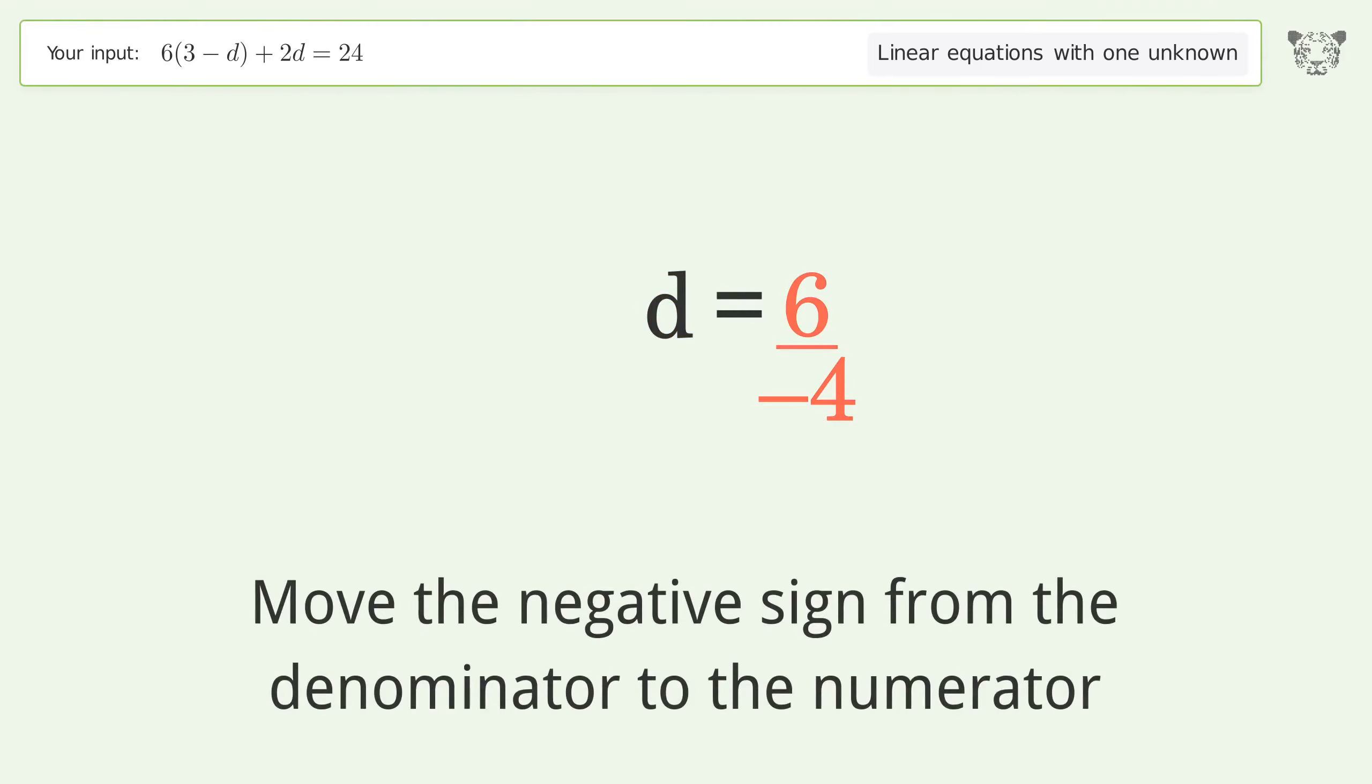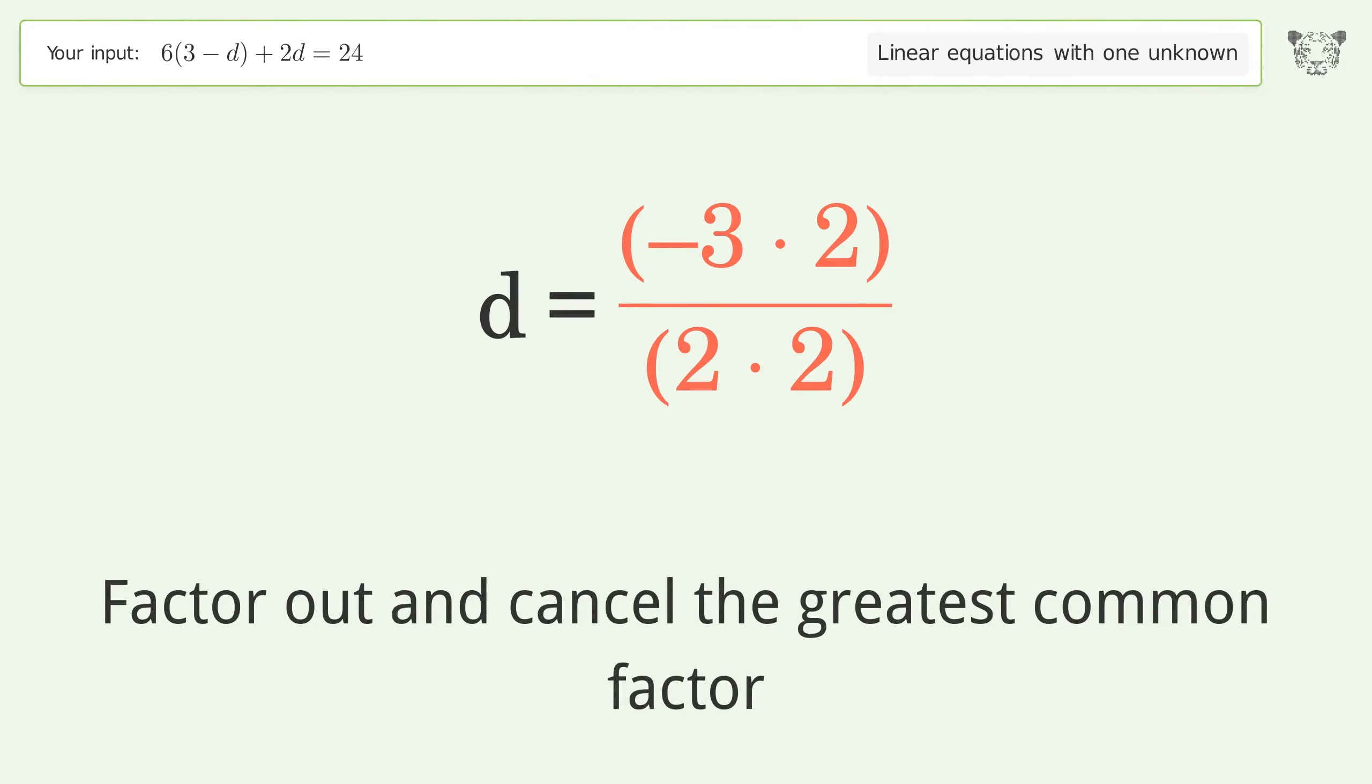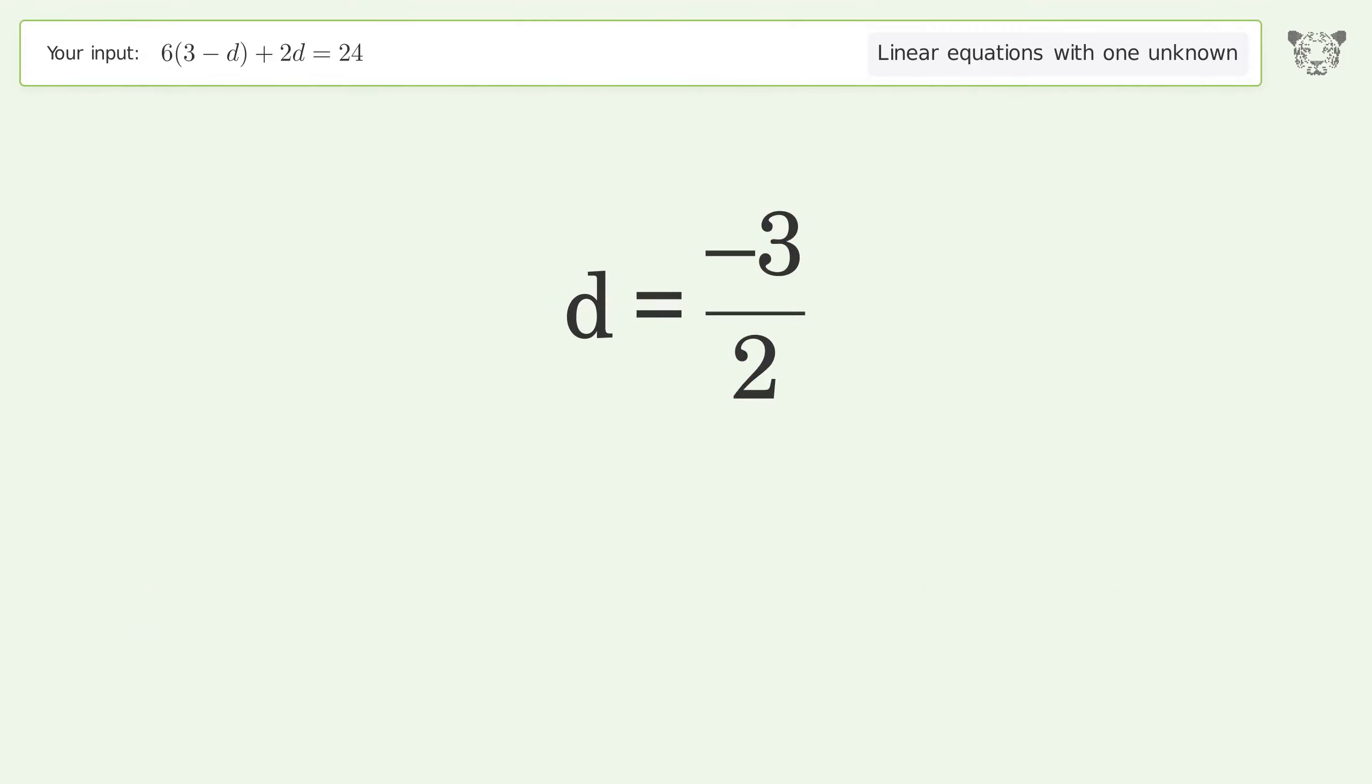Move the negative sign from the denominator to the numerator. Find the greatest common factor of the numerator and denominator. Factor out and cancel the greatest common factor. And so the final result is d equals negative 3 over 2.